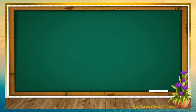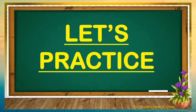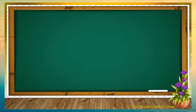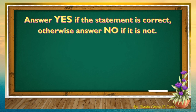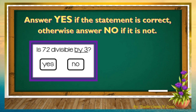Children, let us apply what we have learned by doing the following practice exercise. Instruction: Answer yes if the statement is correct; otherwise, answer no if it is not. Number 1: Is 72 divisible by 3? Yes or no? The answer is yes.